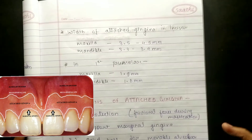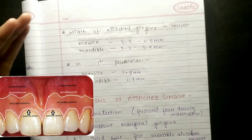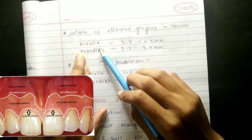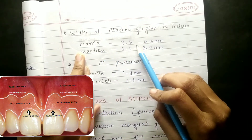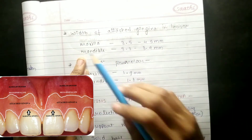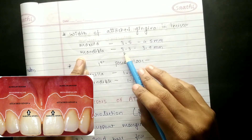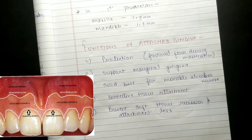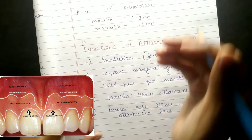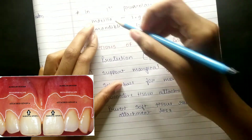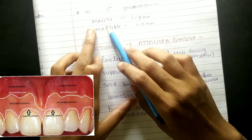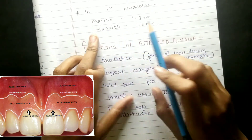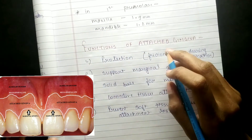Coming to the specific width of attached gingiva at the incisors: comparing the maxilla and mandible, in the maxilla it is 3.5–4.5 mm, whereas in the mandible it is 3.3–3.9 mm. Coming to the first premolar: in the maxilla it is 1.9 mm, whereas in the mandible it is 1.8 mm.